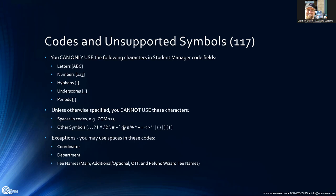What I've gone in and done is have all code areas follow these rules: you can only use letters, numbers, hyphens, underscores, and periods in codes. There are some exceptions — you can use spaces in the coordinator, department, and fee names. But for main things like grouping codes, you cannot have a space — that will break things in ACE web.